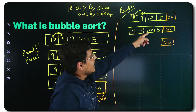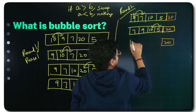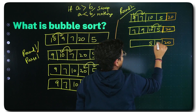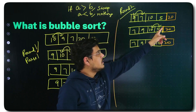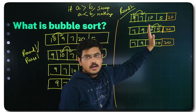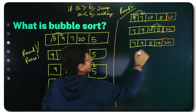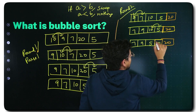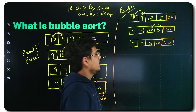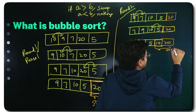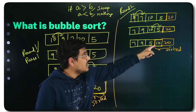Check again: 9 and 10 — 9 is smaller than 10, do nothing. Then 10 and 5 — 10 is greater than 5, swap is needed. After the swap, round 2 is over. 10 also reaches its correct place, so now this portion is sorted as well. Round 2 gives you the second largest element at its correct place.